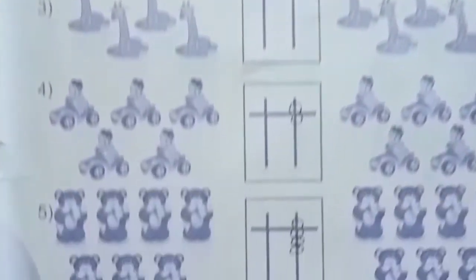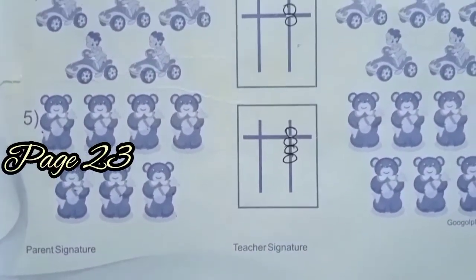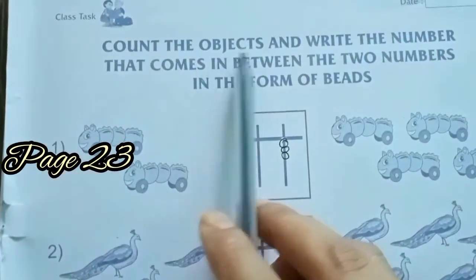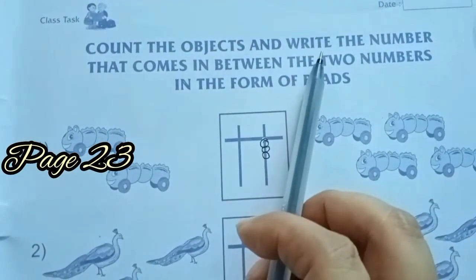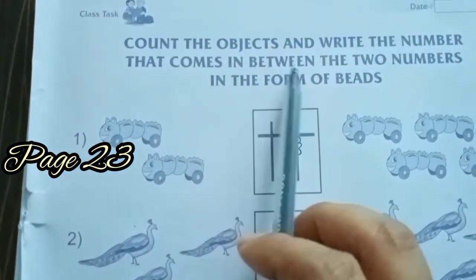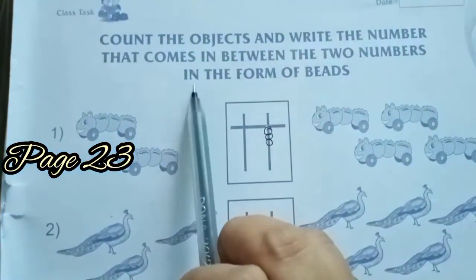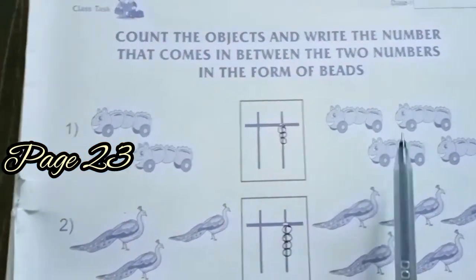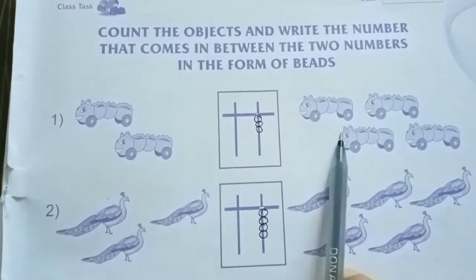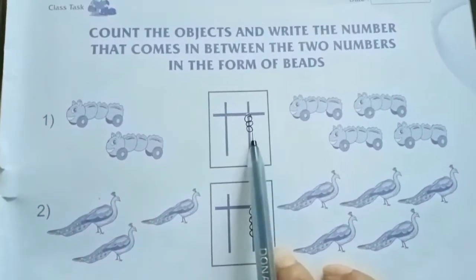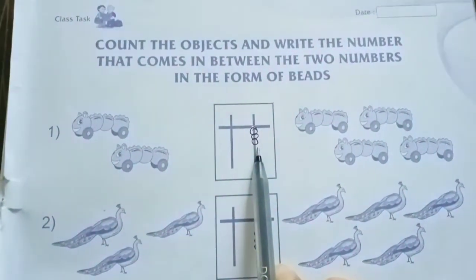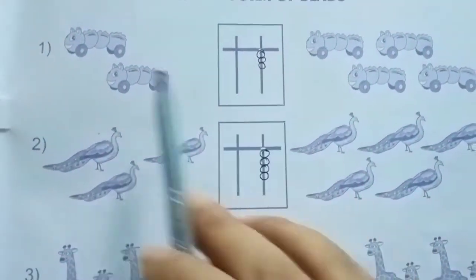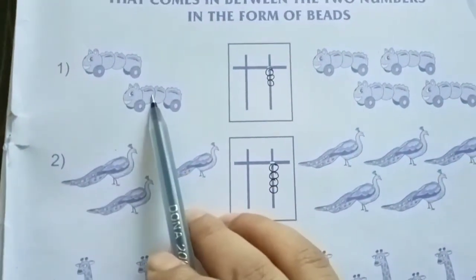Take out page number 23. We shall start today with this page — count the objects and write the number that comes in between the two numbers in the form of beads. So two pictures are given on each side; we have to count what comes in between and draw it in the form of beads. I have already done one for you.